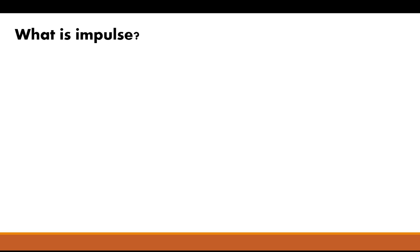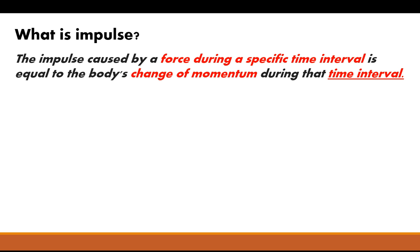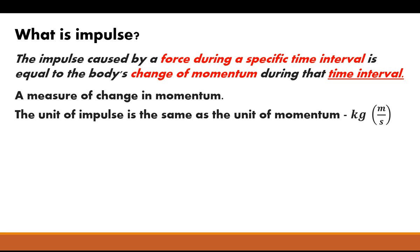Now leads us to the next question: What is impulse exactly? Impulse can be defined as caused by the force during a specific interval of time. It's equal to the body's change in momentum during that time interval. So it's a way to measure a change in momentum. You can see it highlighted in red, the change in momentum during the time interval. So the unit of impulse is the same as the unit of momentum, kilograms times meters per second.